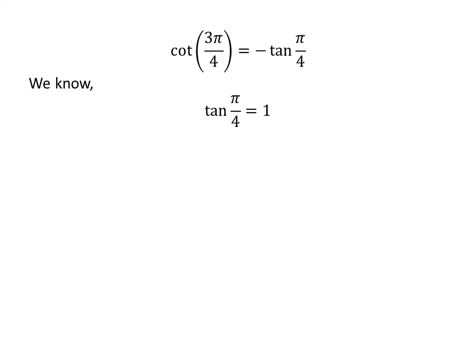We know tangent of pi upon 4 is equal to 1. So cotangent of 3 times pi upon 4 is equal to minus 1.